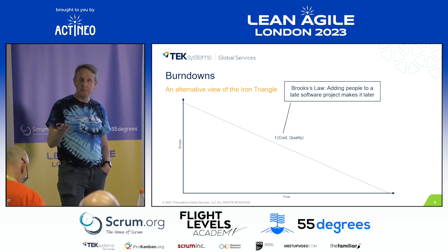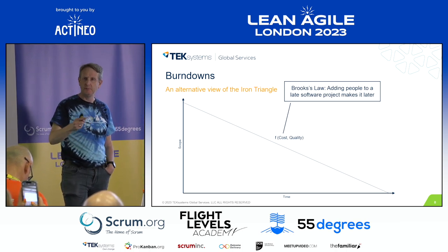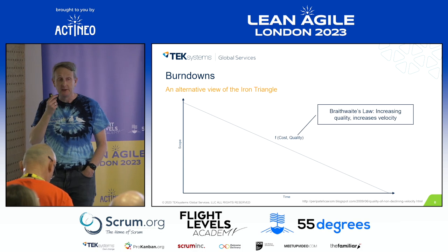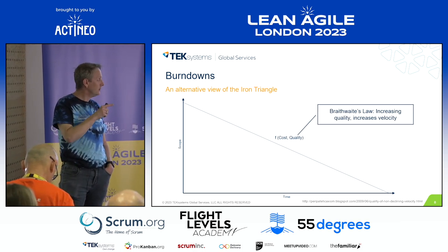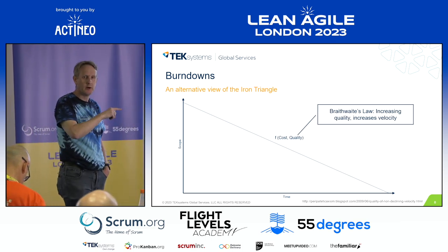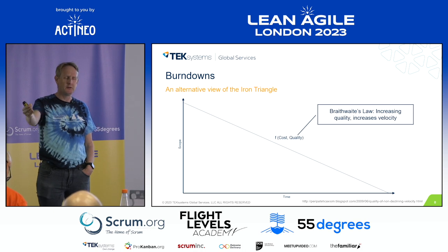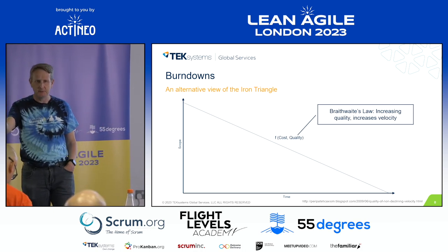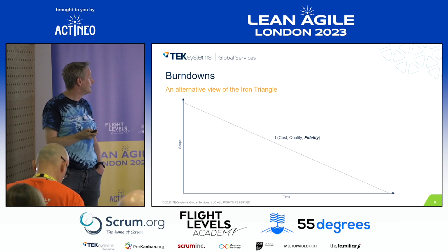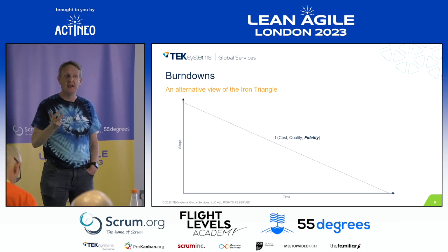And then quality — well, if you start cutting quality, one, you don't want to do that, but probably it's going to make things worse anyway. Interestingly, I'm going to coin something I'll call Braithwaite's Law. Keith Braithwaite hypothesised that you can actually affect the slope of this — if you increase quality, you can increase velocity. That's quite a hard thing for people to get their heads around: I spend more time writing tests and I get my software delivered more quickly? Surely I need to spend less time writing tests. So you can influence with quality, just not in the way we expect. And I think fidelity is basically the third bit of this equation — the slope of that line is a function of cost, quality, and fidelity.